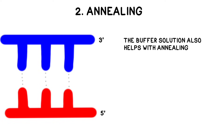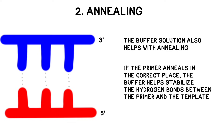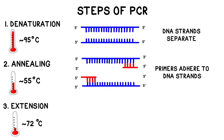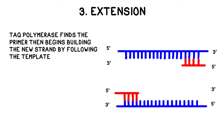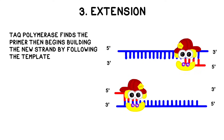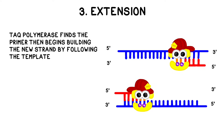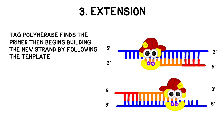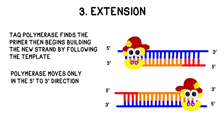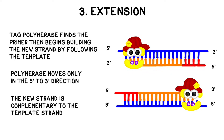The buffer also helps with the primer annealing process. If the primer sticks correctly, the buffer will stabilize the hydrogen bonds that form between the template and the primer. If the primer happens to adhere in the wrong place, the buffer will destabilize the bond. The third stage is extension, which occurs at about 72 degrees Celsius. This is where the polymerase in polymerase chain reaction finally comes onto the scene. The Taq polymerase enzyme moves along the template strand from the primer starting point in the 5' to 3' direction — remember that polymerase can move only in this direction. The Taq polymerase creates a new complementary strand out of the dNTPs that we added to the reaction. At the end of the extension phase, the amount of DNA has doubled.